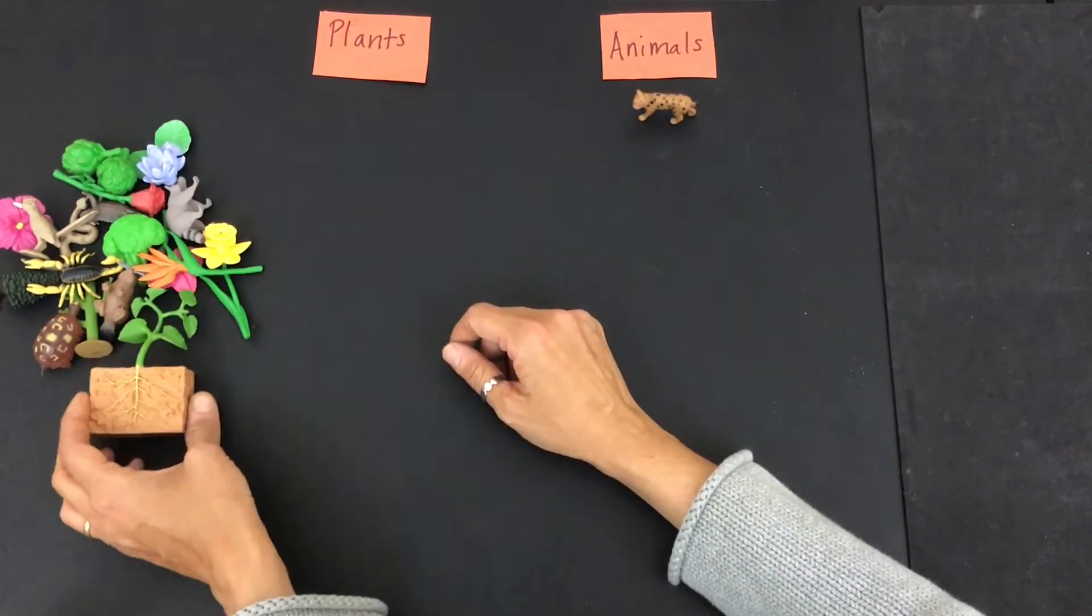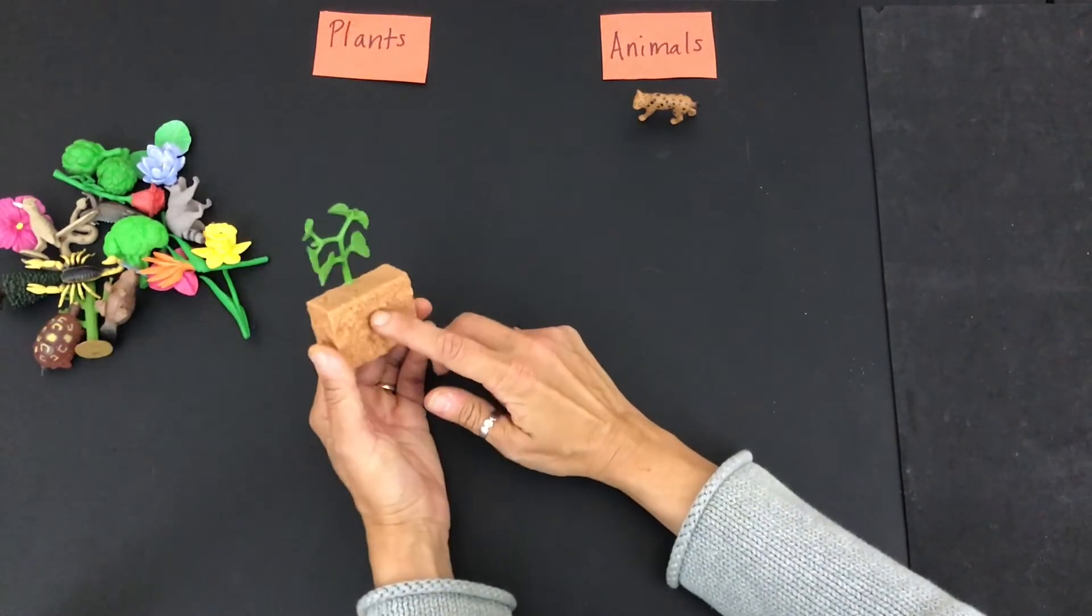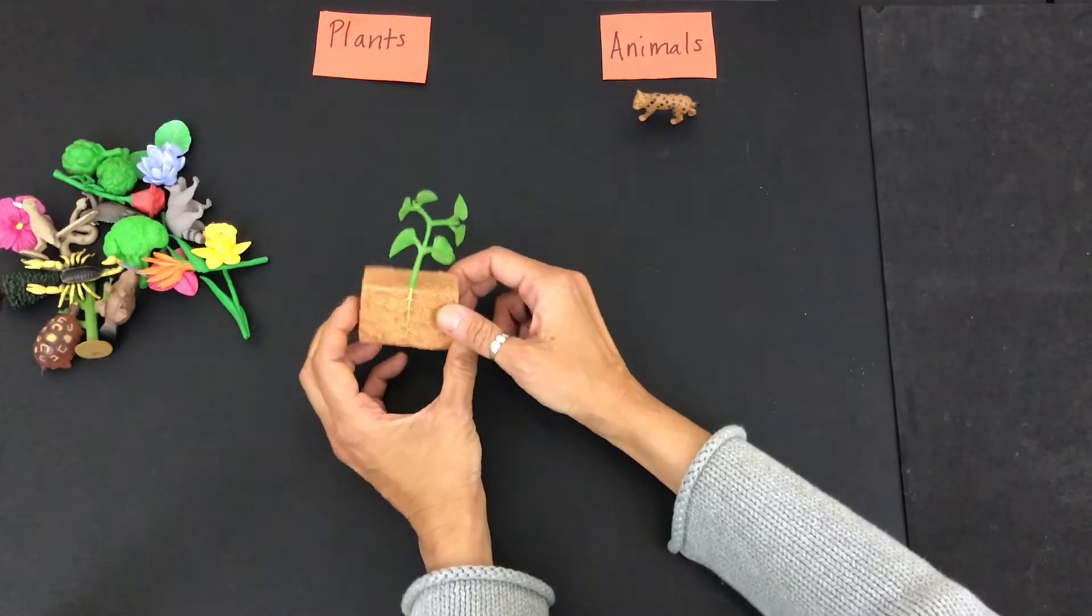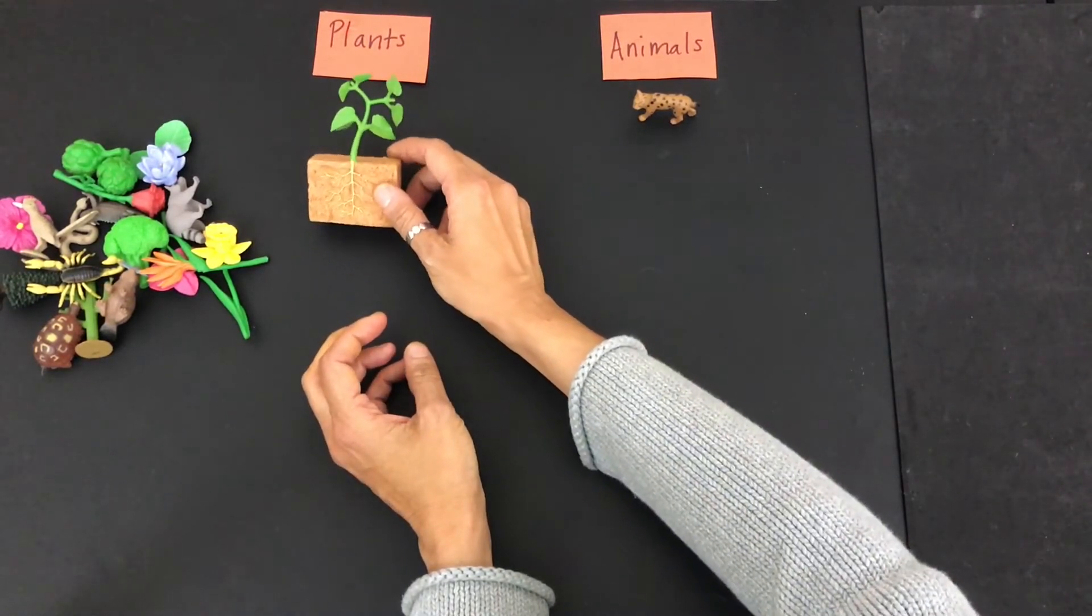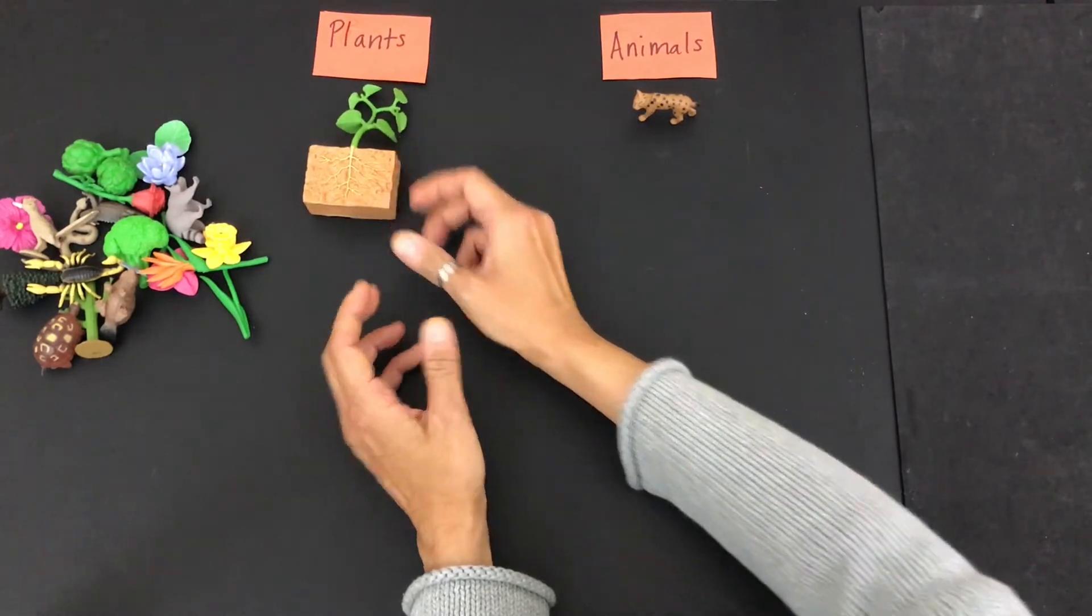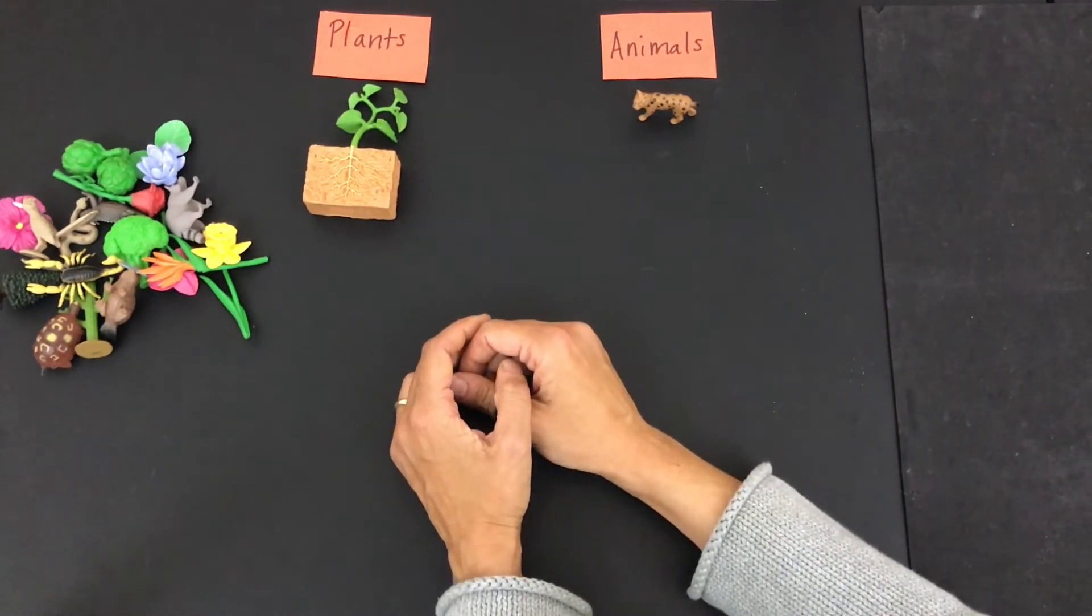What about this? These are beans. That's right, it's a plant, right? It makes its own food using the sunlight in a process called photosynthesis.